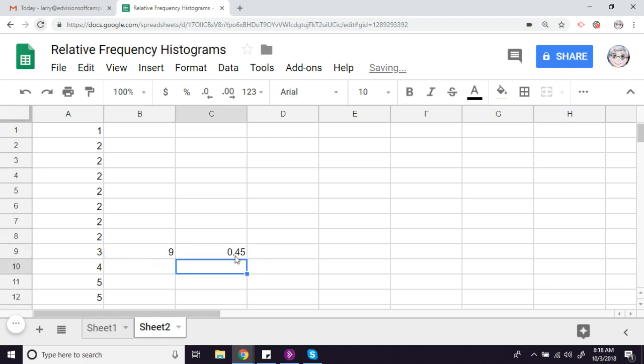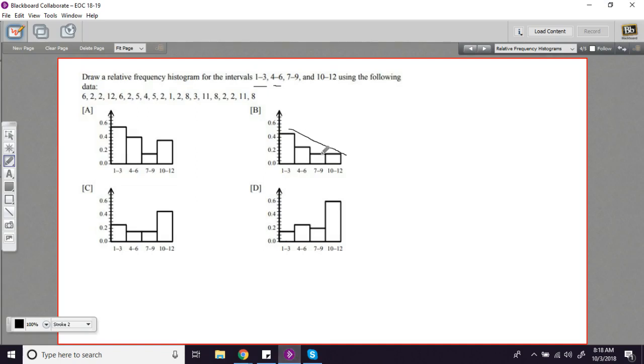Yeah, we got 0.45. So this looks like it's matching correctly to this graph here. If you wanted to double check each of these bars, go ahead and copy and paste that formula again, and you can verify that that's the case. So that is a little bit of work with relative frequency histograms.